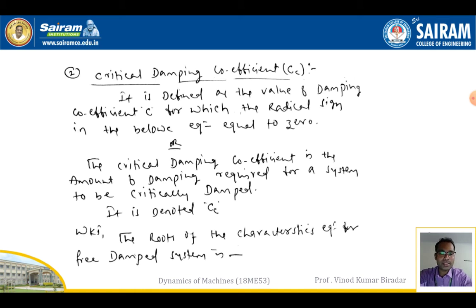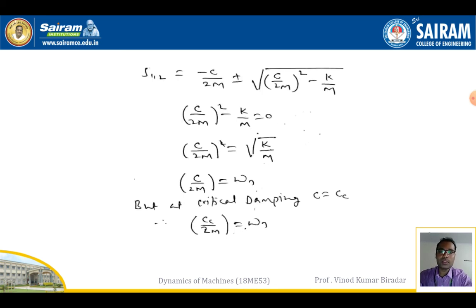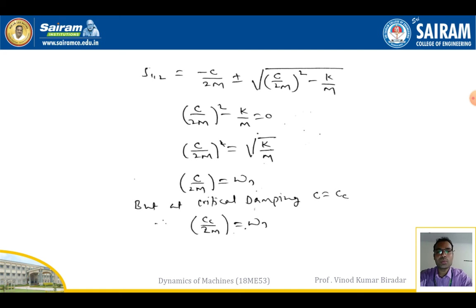We know that the roots of the characteristic equation of a free damped system are: s₁,₂ = −c/2m ± √[(c/2m)² − k/m]. The definition states the radical sign should be zero, so the value inside the square root, (c/2m)² − k/m = 0, which gives (c/2m)² = k/m.